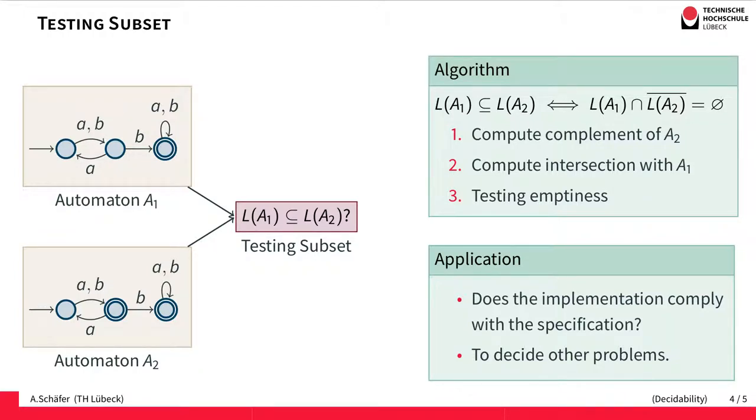The implementation is more detailed, more precise, whereas the specification is more abstract, allows more. So you would like to know whether every run of the implementation actually complies with a specification and that's actually testing subset. Apart from that it's also useful for deciding other problems.